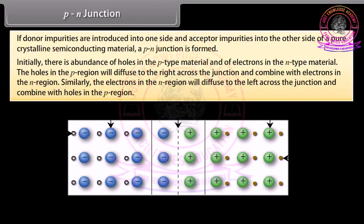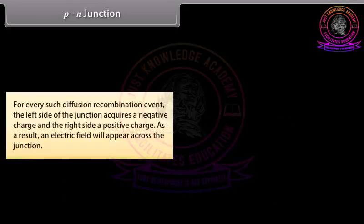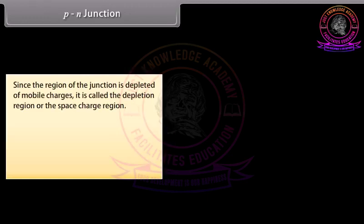Similarly, electrons in the N-region diffuse to the left across the junction and combine with holes in the P-region. For every such diffusion-recombination event, the left side of the junction acquires a negative charge and the right side a positive charge. As a result, an electric field appears across the junction. Since the region of the junction is depleted of mobile charges, it is called the depletion region or the space charge region.